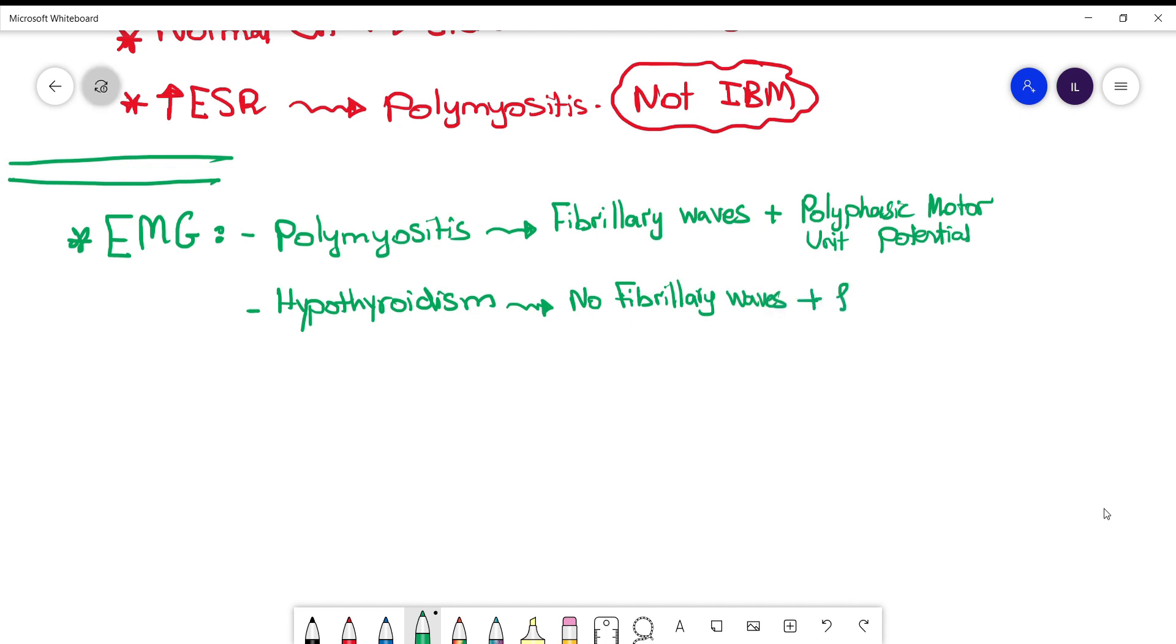For biopsy, you need to know how polymyositis looks like, and that's inflammatory cells as well as necrosis. Inclusion body myositis includes, from the name, inclusion bodies, and these are cytoplasmic bodies or vacuoles that can be seen under the microscope.